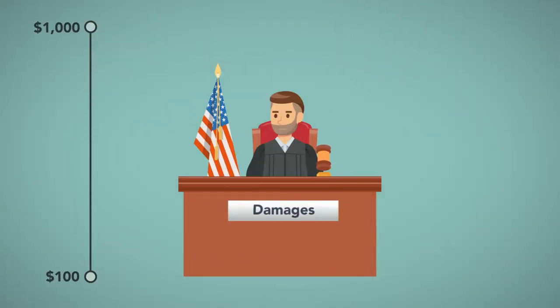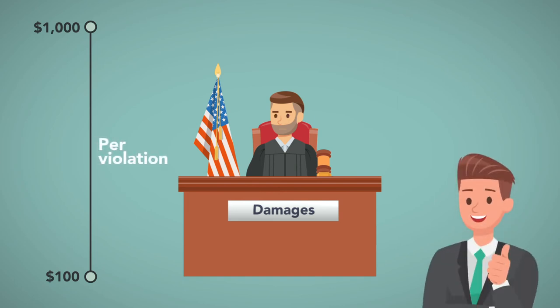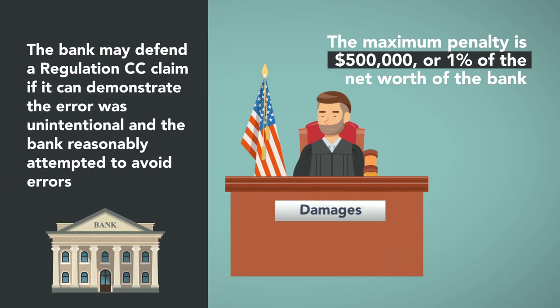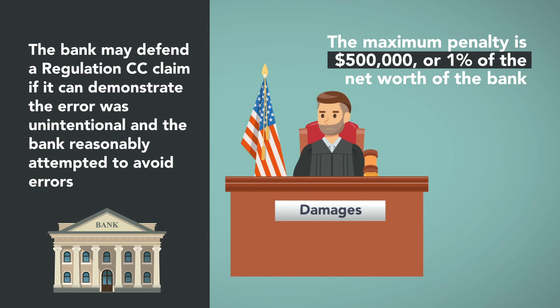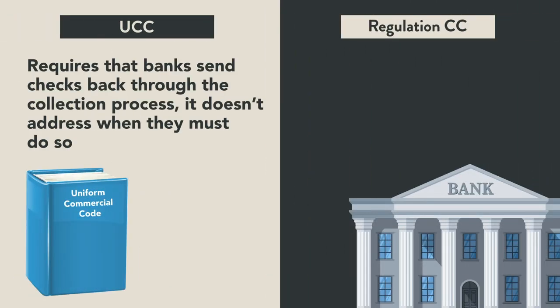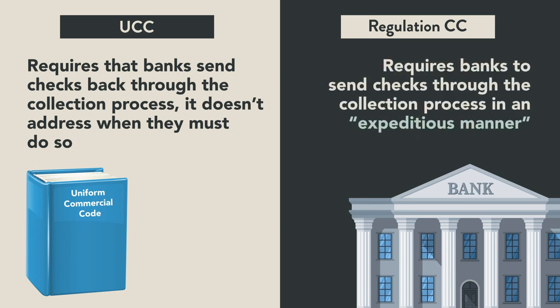Actionable damages for Regulation CC violations include penalties between $100 and $1,000 per violation, plus reasonable attorney's fees; the maximum penalty is $500,000 or one percent of the net worth of the bank. The bank may defend a Regulation CC claim if it can demonstrate the error was unintentional and the bank reasonably attempted to avoid errors. While the UCC requires that banks send checks back through the collection process, it doesn't address when they must do so; Regulation CC, though, requires banks to send checks through the collection process in an expeditious manner.